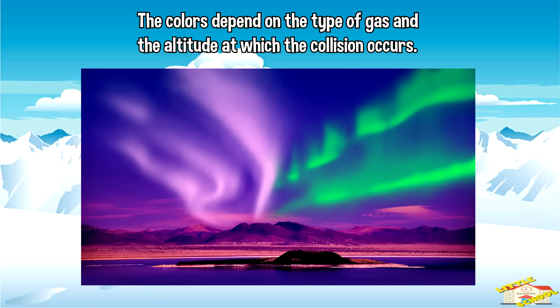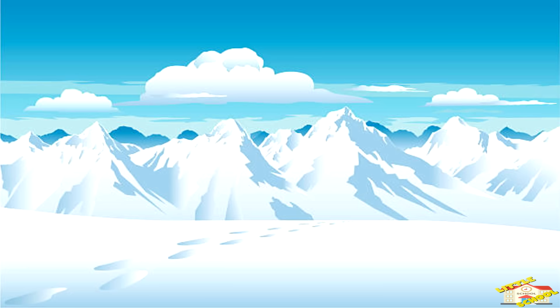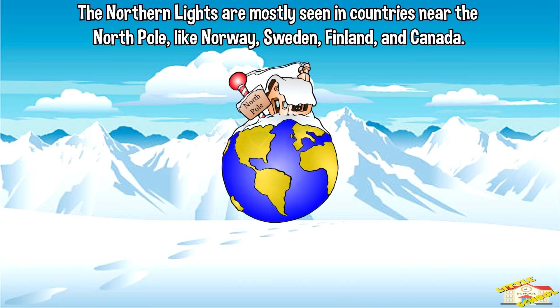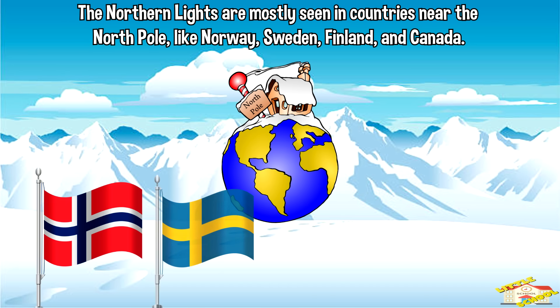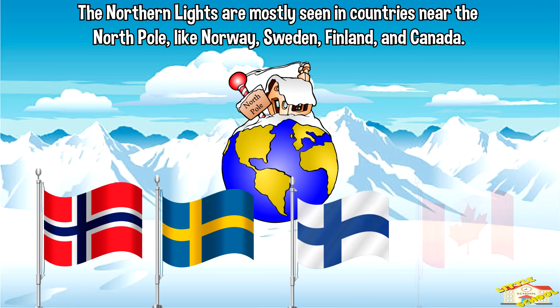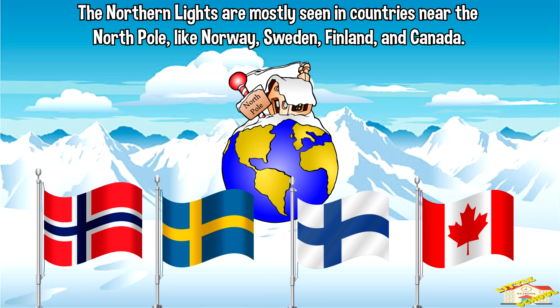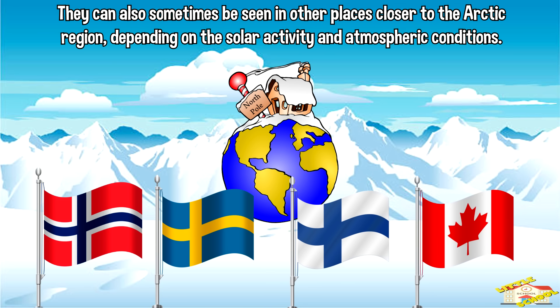The northern lights are mostly seen in countries near the North Pole, like Norway, Sweden, Finland, and Canada. They can also sometimes be seen in other places closer to the Arctic region, depending on solar activity and atmospheric conditions.